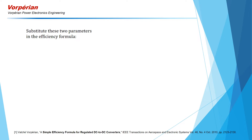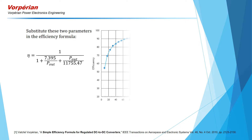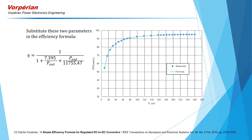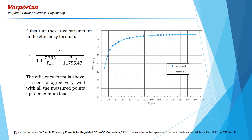We substitute these two parameters in the efficiency formula and we plot it. Here we see the solid curve given by the efficiency formula to be in excellent agreement with the measured values. The two parameters — 7.395 watts and 11,755.47 watts — were measured at two points: the no load point and the maximum load point.